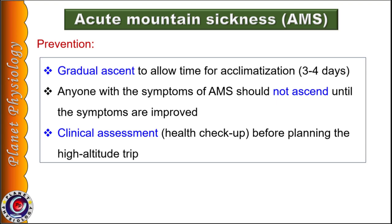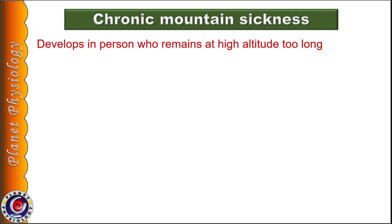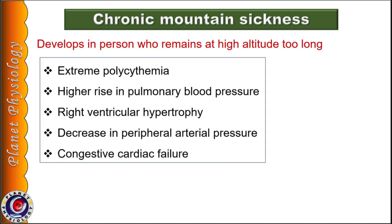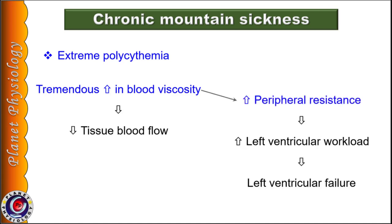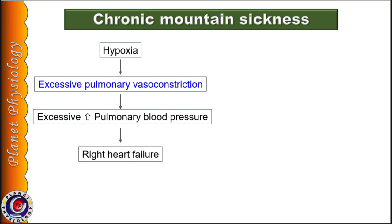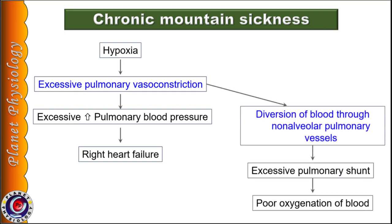In contrast to acute mountain sickness, chronic mountain sickness develops in a person who stays at high altitude for too long. Its features include extreme polycythemia, higher rise in pulmonary blood pressure, right ventricular hypertrophy, decrease in peripheral arterial pressure, and congestive cardiac failure. Extreme polycythemia increases blood viscosity, decreasing tissue blood flow and increasing peripheral resistance, leading to left ventricular failure. Hypoxia causes pulmonary vasoconstriction, leading to pulmonary hypertension and right heart failure. Persons suffering from chronic mountain sickness should be brought to lower altitudes.